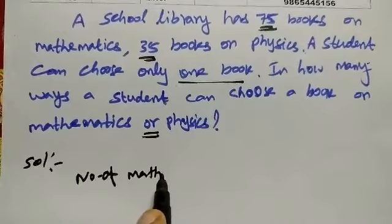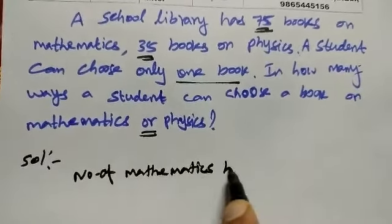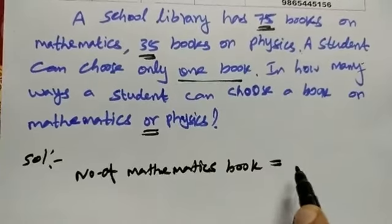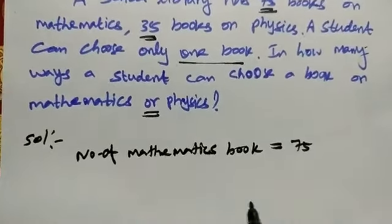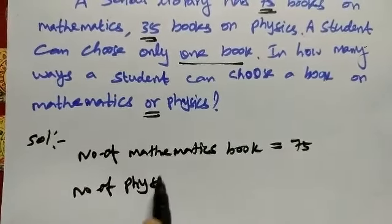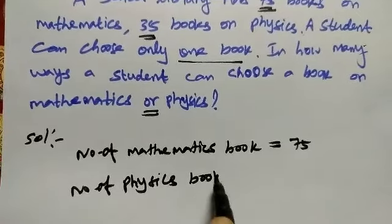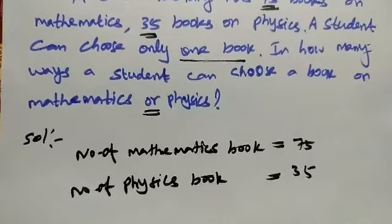For number of mathematics books, we call the number of mathematics books equal to 75. The number of physics books equal to 35.